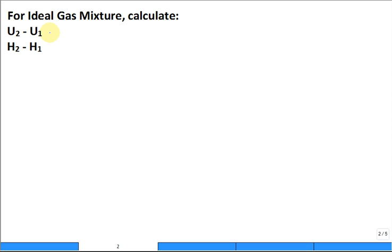I'm going to work it out for the change in internal energy. So U2 minus U1, if you didn't have an ideal gas mixture, if it was just a pure ideal gas, then it would be just the mass times U2 minus U1. But because we have a mixture, you can sum over each of the components the mass for that component plus the change in internal energy for that component.